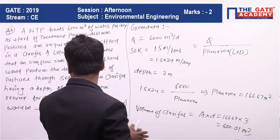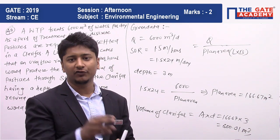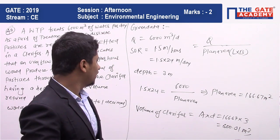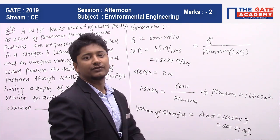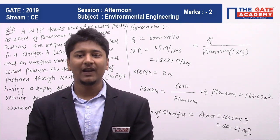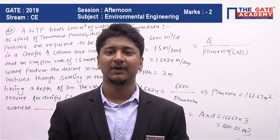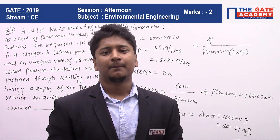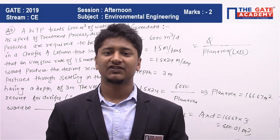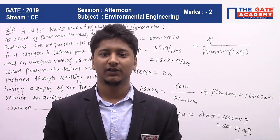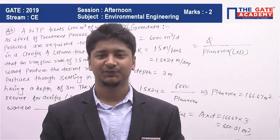So 500 meter cube volume of clarifier is required. In this question, options are not given, so you have to fill in the blank. I hope you liked this video. If you like this solution and the calculation, please subscribe to our channel for the next video related to the GATE 2019 civil engineering question paper. Thank you.